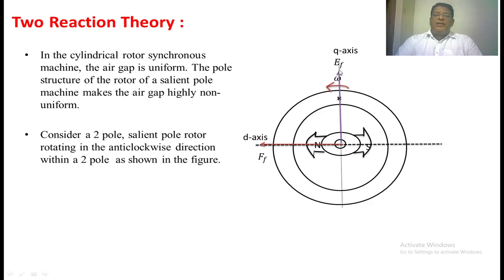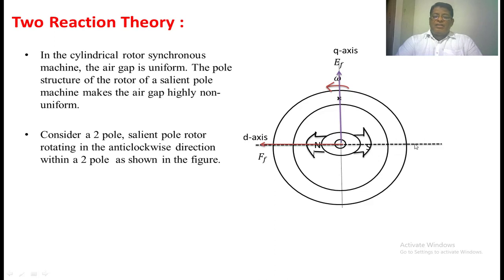Armature MMF and flux are perpendicular to the main field MMF when a resistive load is applied. Suppose we apply an inductive load across the stator winding — the armature current lags EF by 90 degrees, so Ia comes onto the d-axis, and armature flux also comes on the d-axis, quite opposite to the main MMF. So the resultant MMF and resultant flux will be decreased.